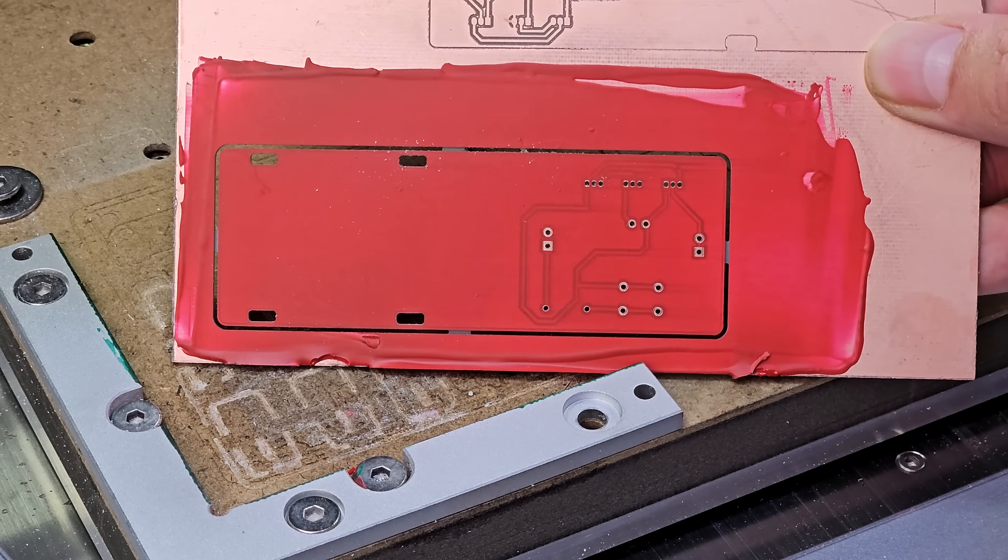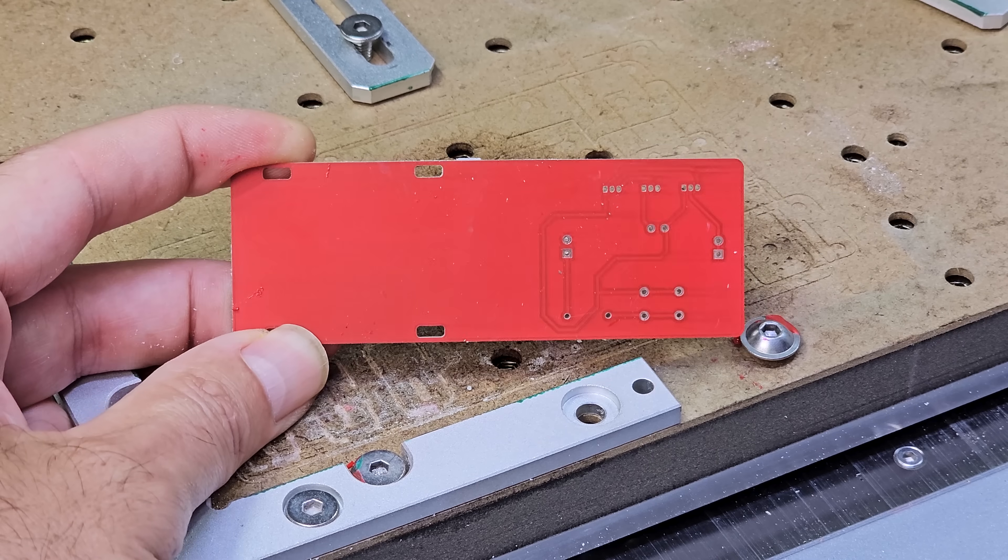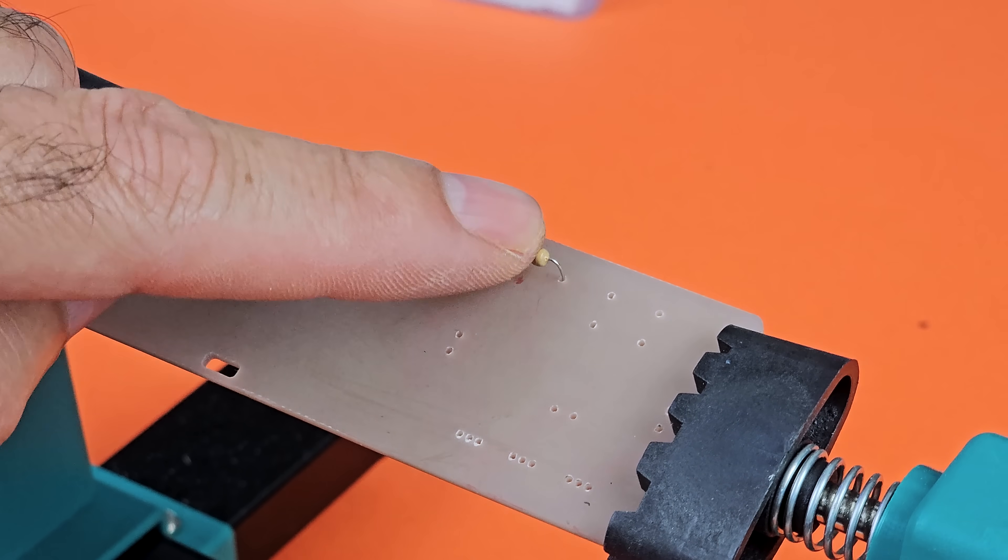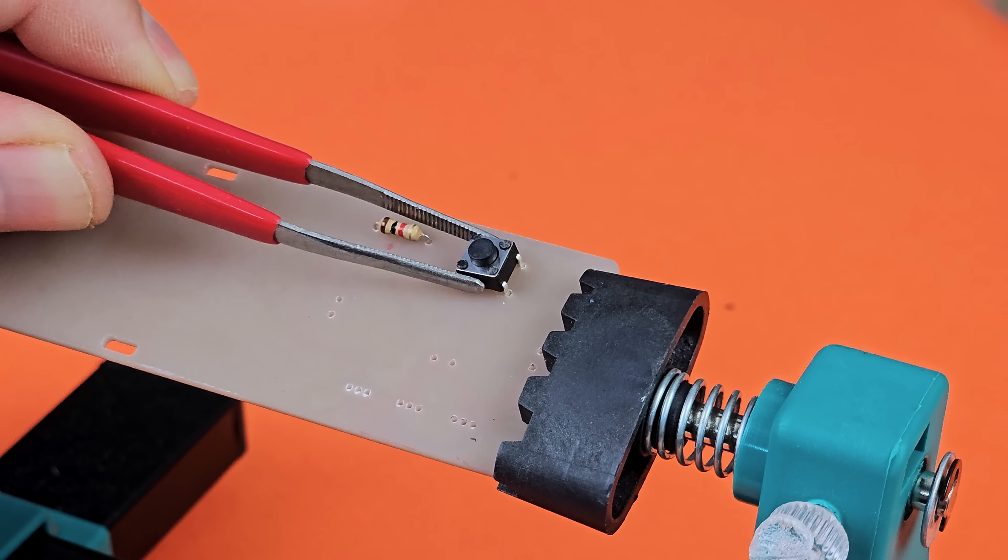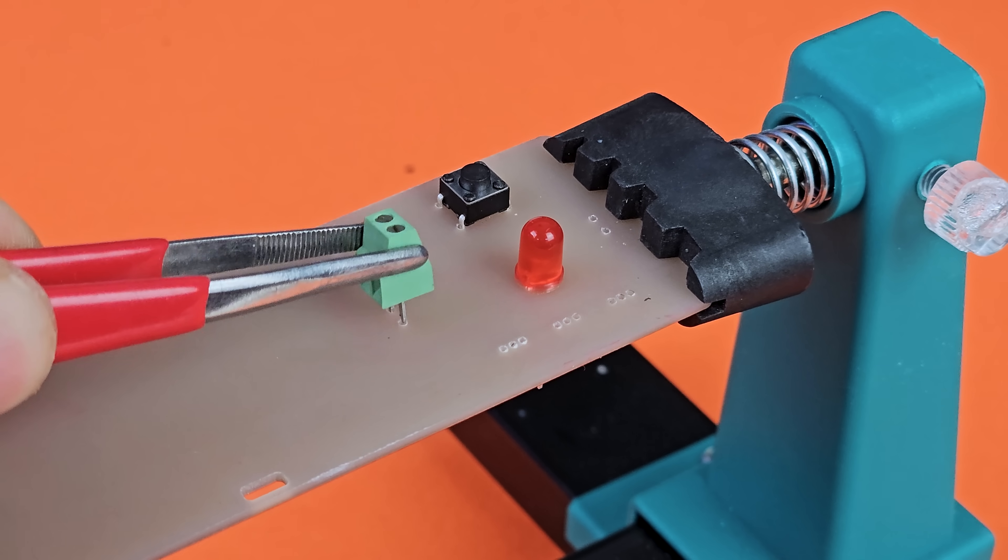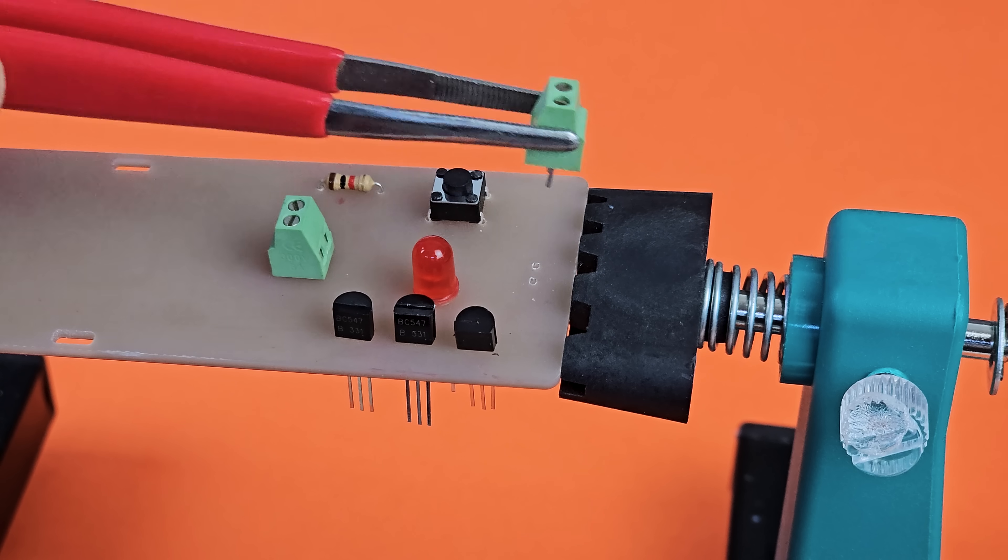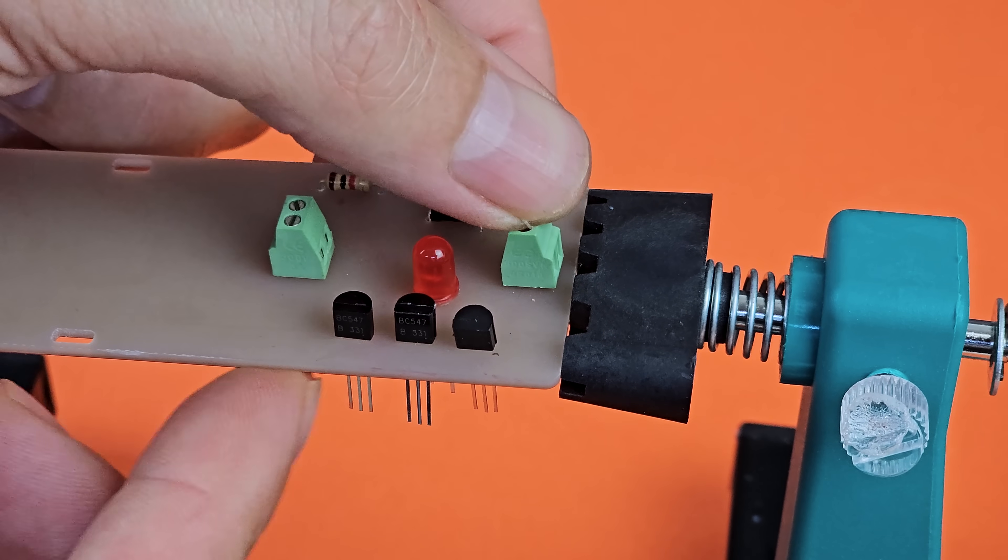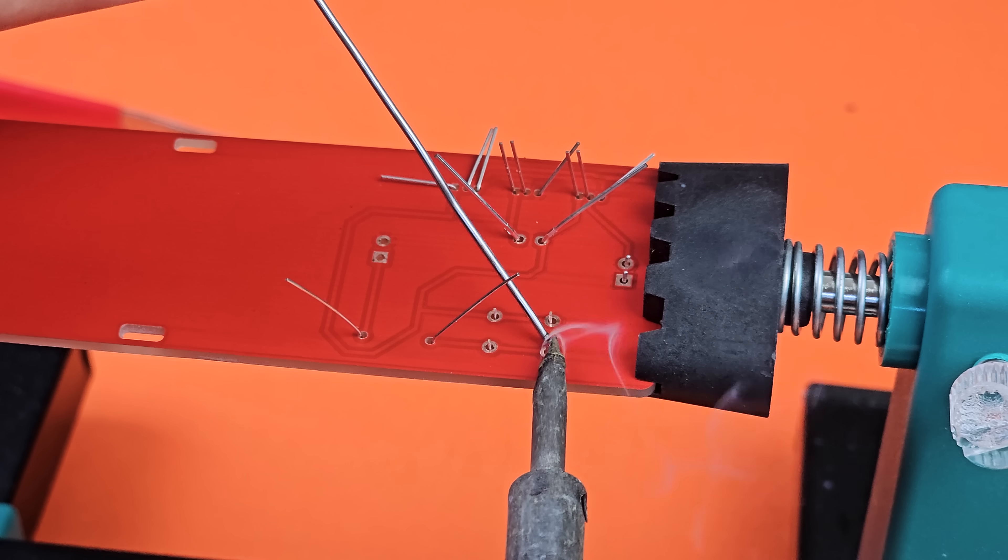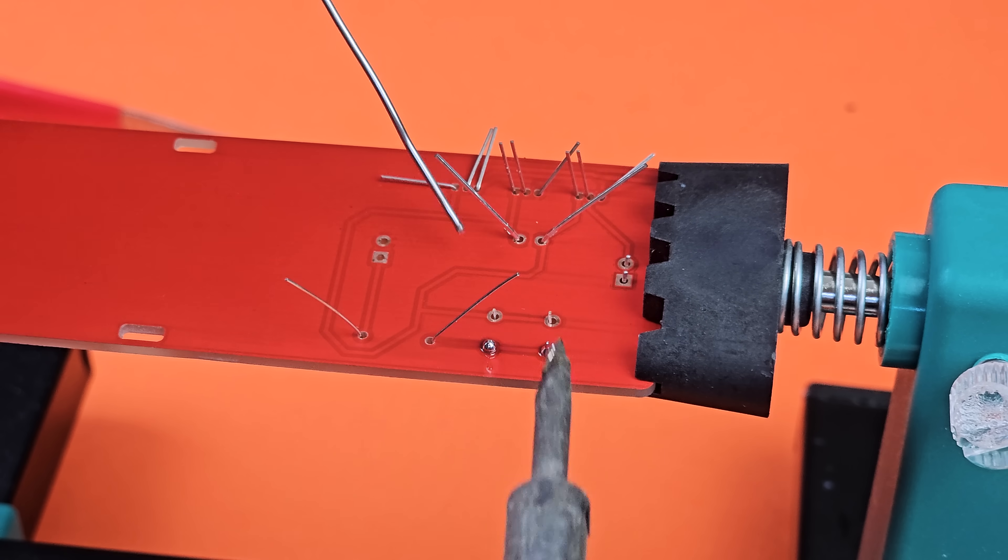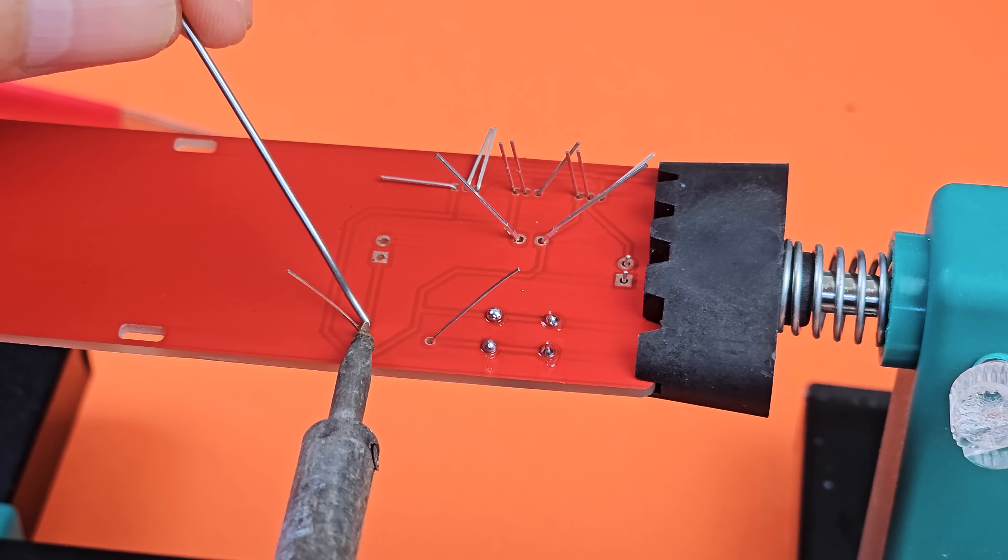Now it's time to insert all the through-hole components, the 1,000 ohm resistor, the test button, the orange LED, the two-pin terminal block, the three BC547 transistors, and finally, the last terminal block. The next step is to solder all the components and trim the excess leads.